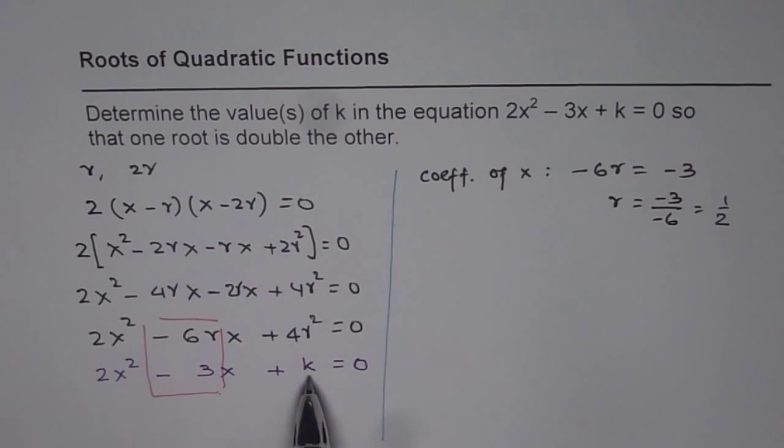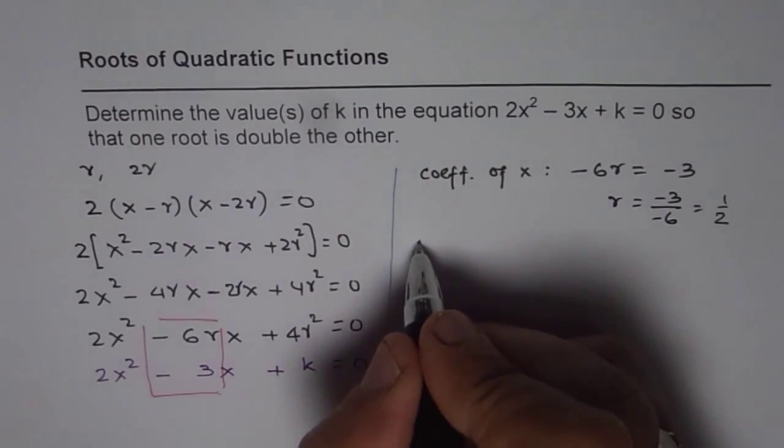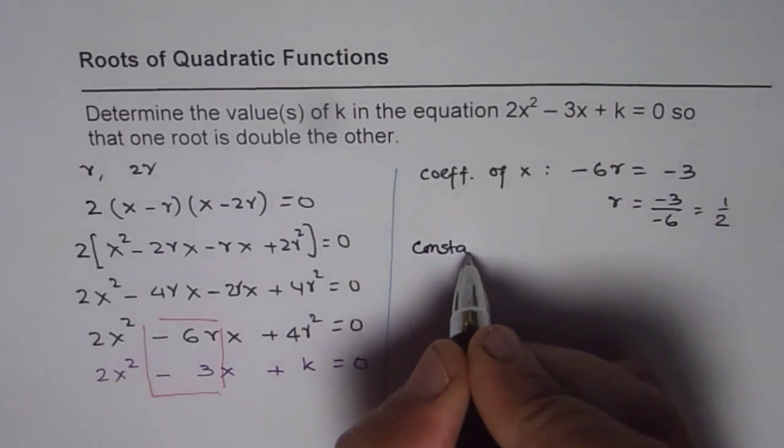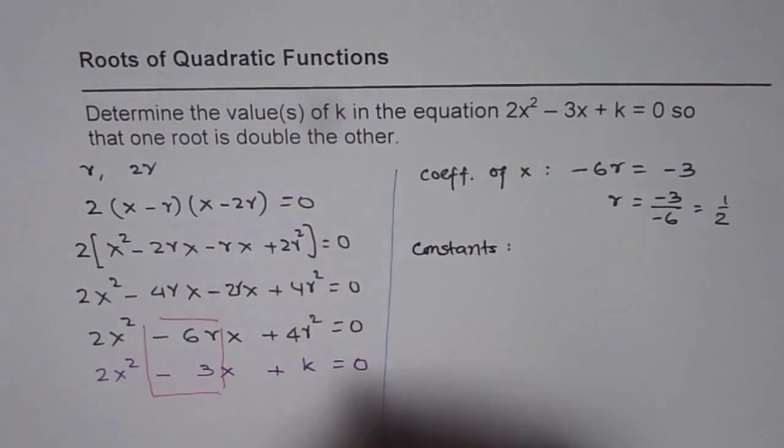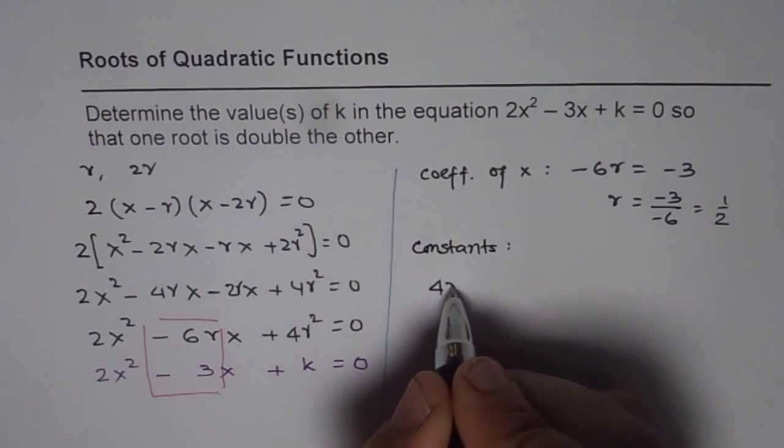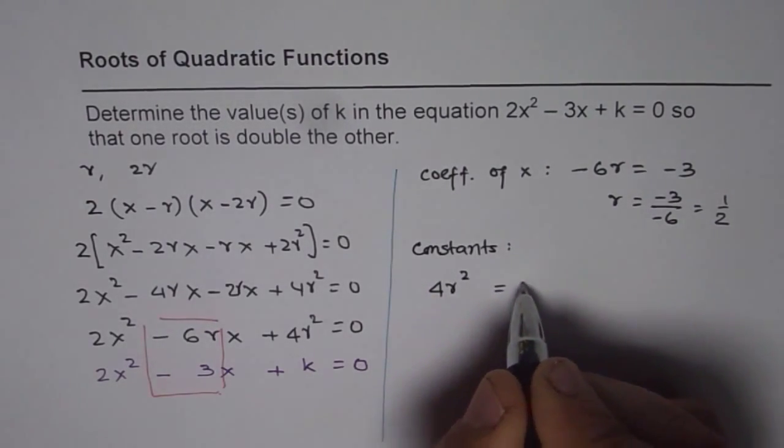Now, we can compare the constants, right? Now, compare constants. So, if you compare constants, we have 4r squared is equals to k.